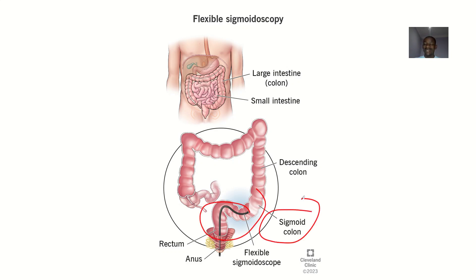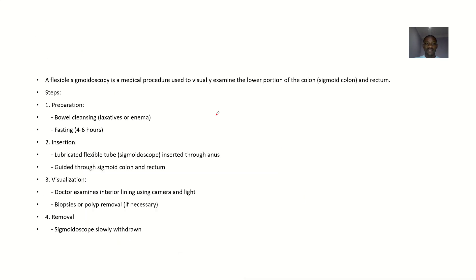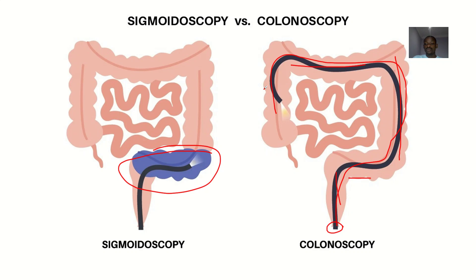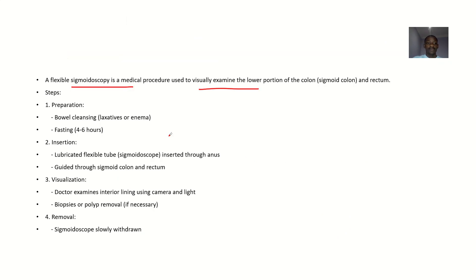A flexible sigmoidoscopy is a medical procedure used to visually examine the lower part of the colon, specifically the sigmoid colon. It can also be used to observe the rectum, which is located before the sigmoid colon.